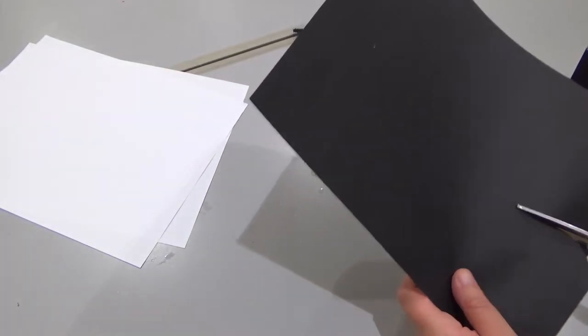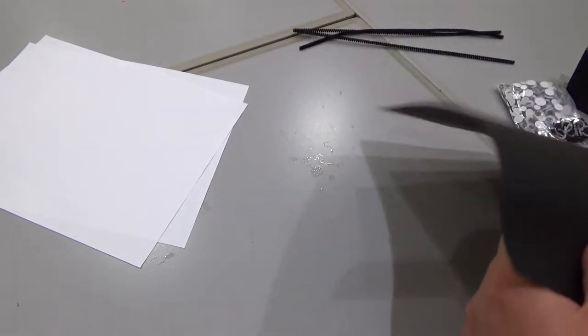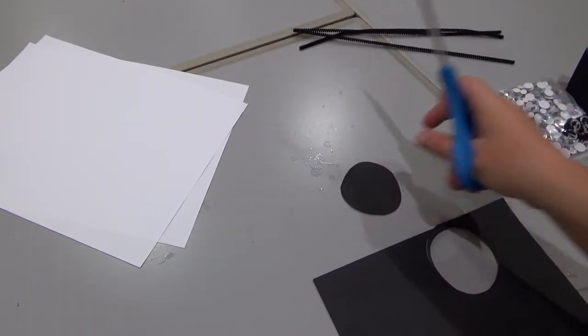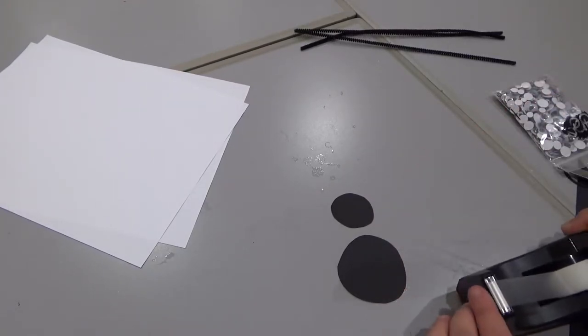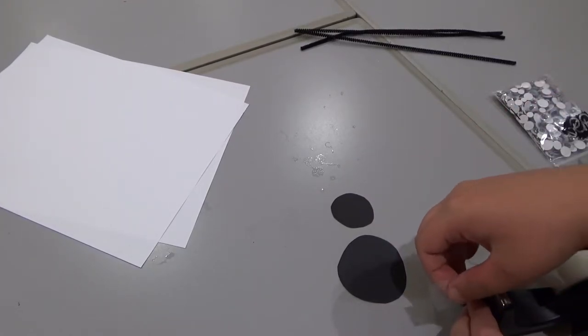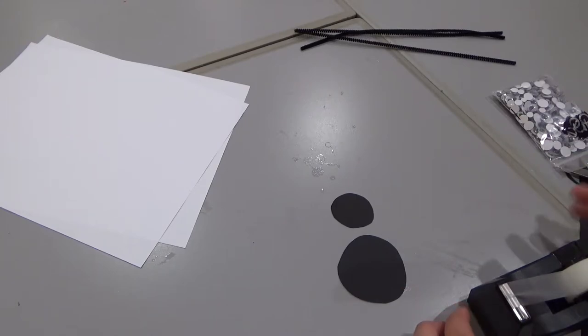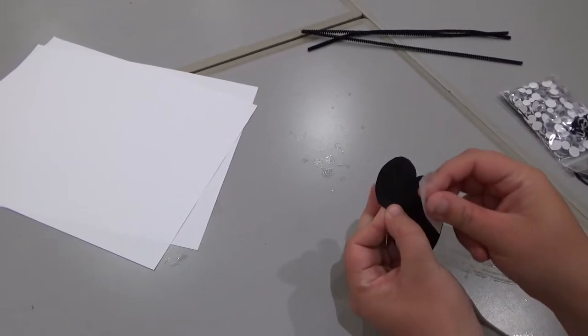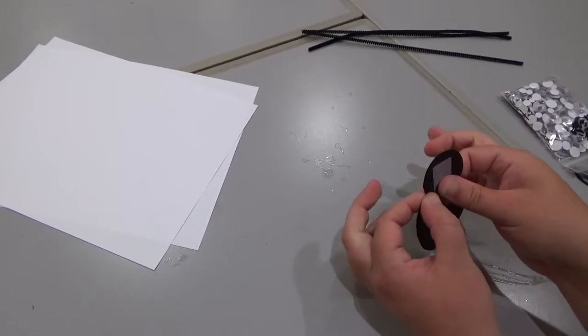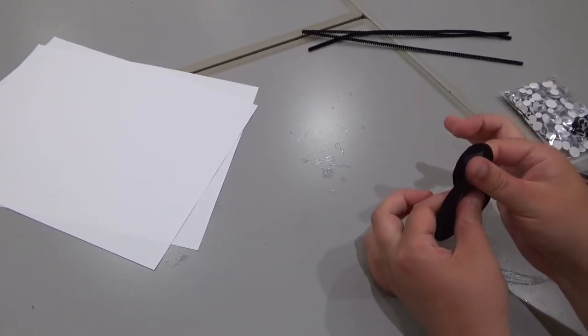So the first part is you want to cut out a circle, then a smaller circle. So now we have these two components. If you have a glue stick, you can glue them together. Right now, I just have some scotch tape. Either would work. So you're going to overlap like this, kind of like a snowman, and then you are going to tape it together.